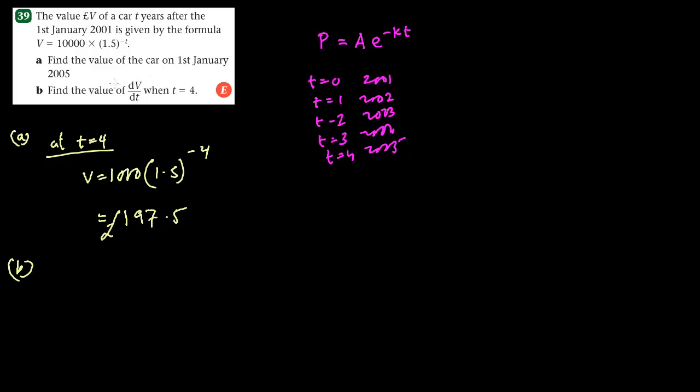For question part b, we have to find the rate. Anything with dt is a rate — meaning change with time. dv by dt means rate of change of volume. So in order to find dv by dt, we need to know the derivative.